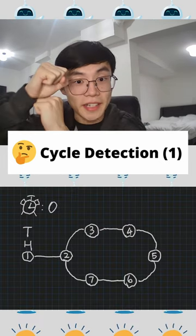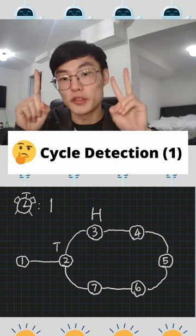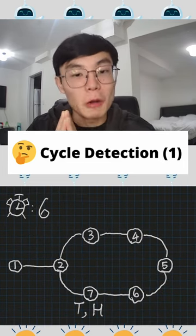And that is where the tortoise and hare algorithm comes in. Time zero, the tortoise and hare starts at the same spot. Tortoise takes one step at a time, and the hare moves two steps at a time. And eventually, the hare will meet up with the tortoise.